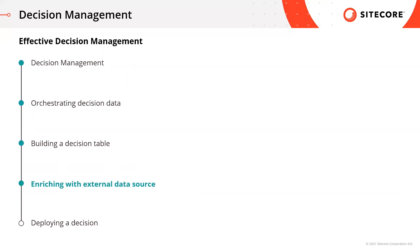Now that we've seen the basics of orchestrating data and setting up rules, let's see how we can enrich the decision with an external data source. In this example, we'll create a connection to an external source, drag the connection into the decision canvas, and include the connection output in our decision table by adding columns and rules. I'd like to make a change to this decision that we've just modeled. At this insurance company, a risk threshold changes regularly.